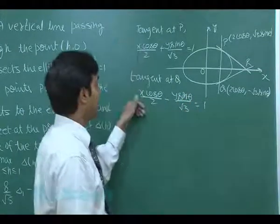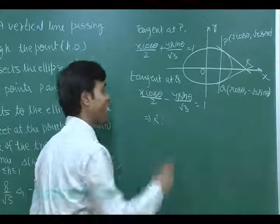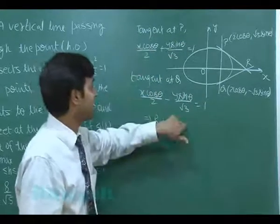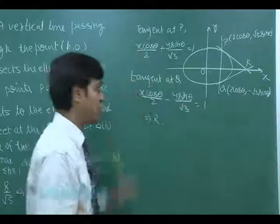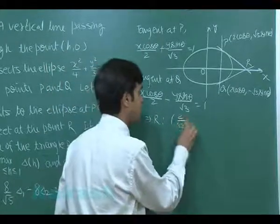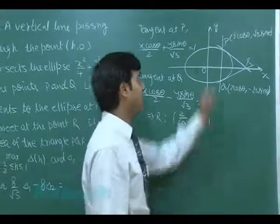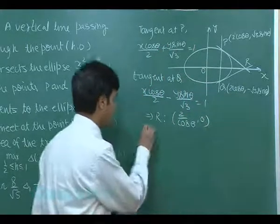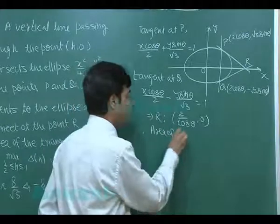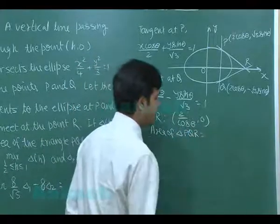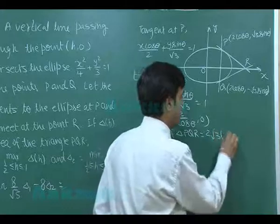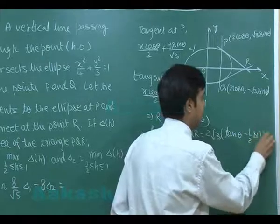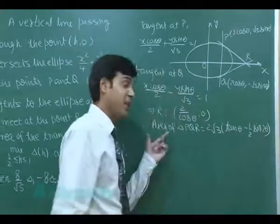We can solve these two equations to get the point of intersection as R. Solving the two, simply we know y is 0. When we add the two, y is cancelled out and that gives me x cosθ = 2. So, point R comes (2/cosθ, 0). When we have all three vertices, we can find out the area of this triangle PQR that comes out as: simplifying we get 2√3 tanθ - (1/2)sin2θ.